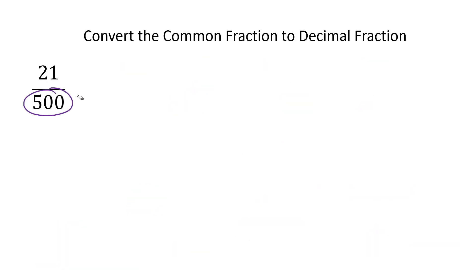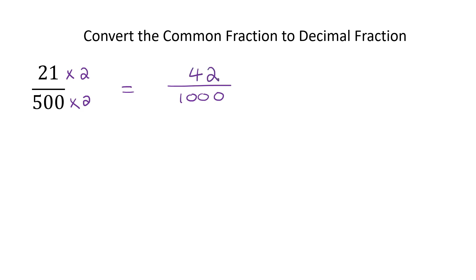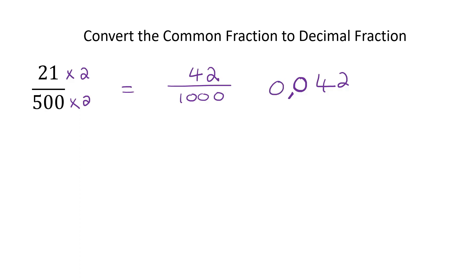Here we have 21 over 500. I would multiply by 2 to end up getting 1000 — because as long as I can get a number with a 1 at the bottom and a whole bunch of zeros, it's fine, it doesn't matter how many zeros. So I take 42 over 1000. Take the number 42, move back three decimal places because I have three zeros — 1, 2, 3 — put your decimal, fill in any empty places with a zero. Always put a zero in the front — the answer is 0.042.